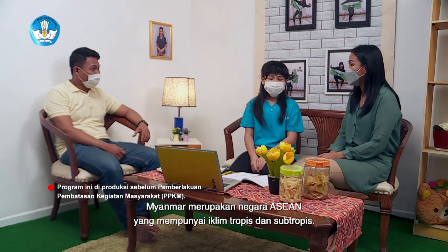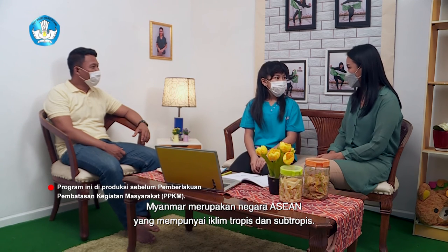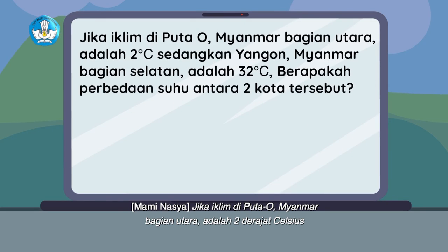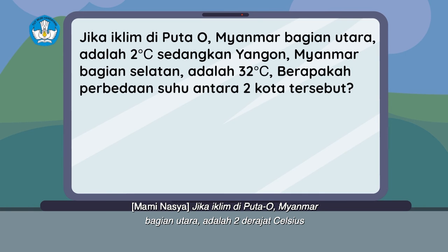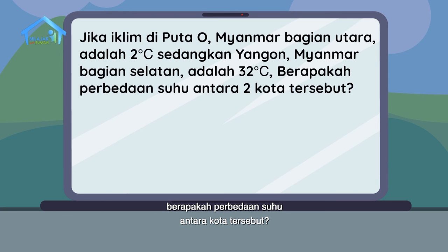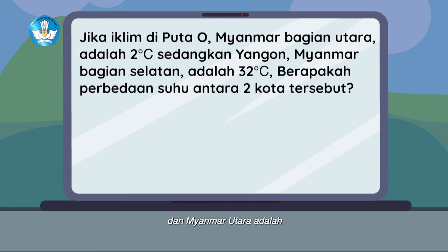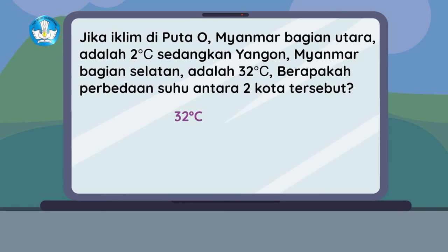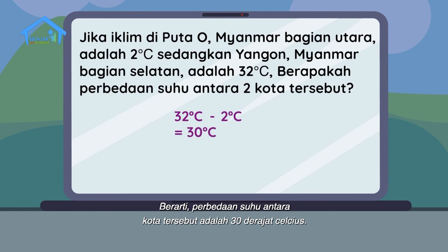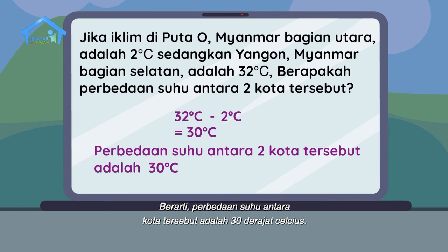Sekarang coba kamu hitung ya. Myanmar merupakan negara ASEAN yang mempunyai iklim tropis dan subtropis. Jika iklim di Putao, Myanmar bagian utara, adalah 2 derajat Celcius, sedangkan Yangon, Myanmar bagian selatan, adalah 32 derajat Celcius, berapakah perbedaan suhu antara kota tersebut? Perbedaan suhu antara Myanmar selatan dan Myanmar utara adalah 32 dikurangi 2 sama dengan 30 derajat Celcius.